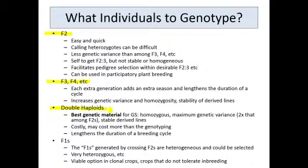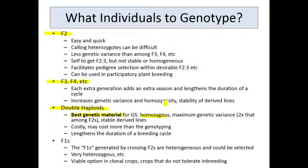Next, you can consider using double haploids. Undoubtedly, double haploids are probably the best material for genomic selection — completely homozygous, and you've maximized your genetic variation. In fact, the genetic variation in a double haploid population will be twice that found among F2s, and the lines are stable. But this can be costly. In my experience, the cost of generating a double haploid is just about the same as the cost of genotyping it. So you need considerable financial resources for both generating the double haploids and genotyping. This can also lengthen the duration of a breeding cycle, depending on how quickly you can get double haploids back from the supplier.